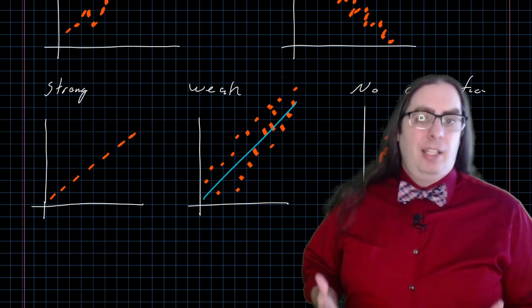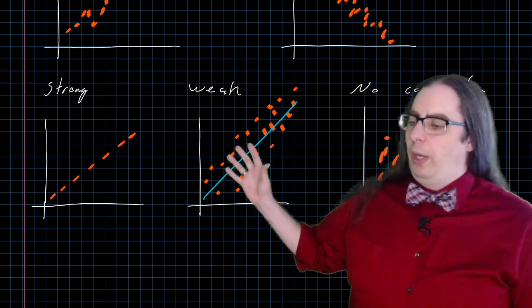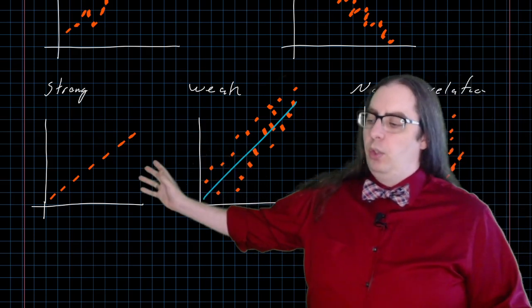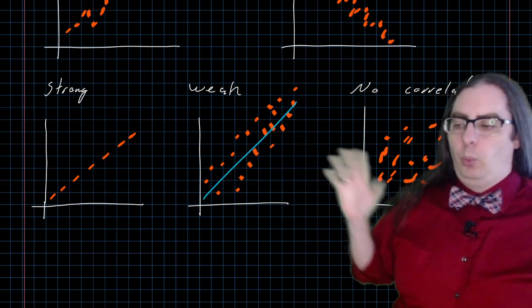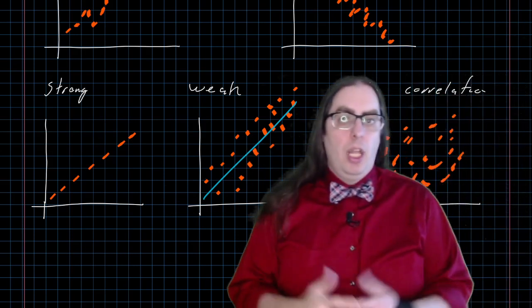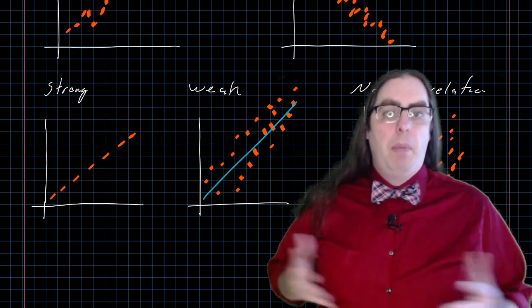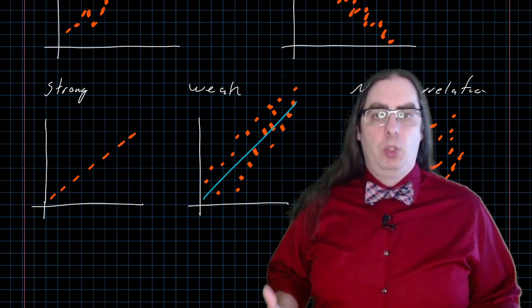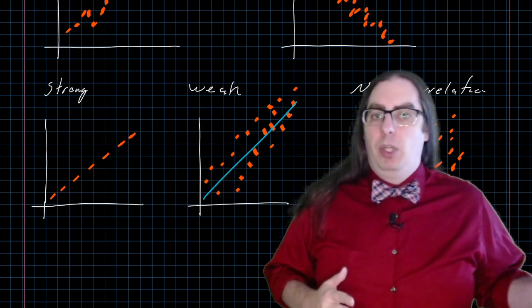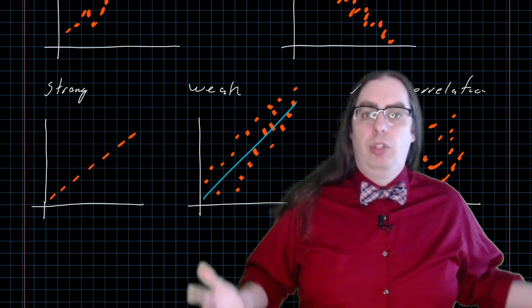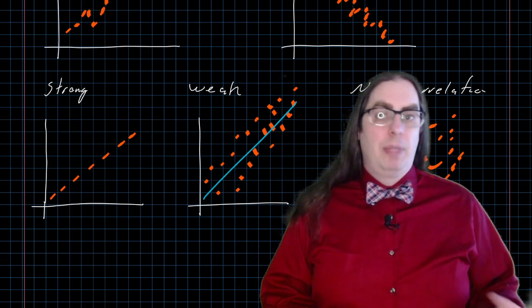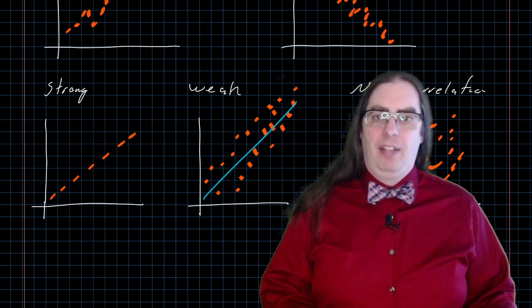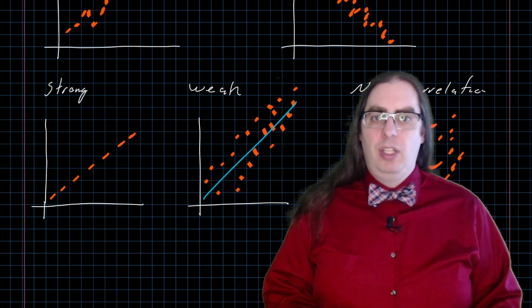For right now, just looking at the pictures and being able to classify things generally based on the picture is good enough. It can get a little bit fuzzy, right? Where do you draw the line between a weak positive linear correlation and a strong positive linear correlation? Where do you draw the line between a weak correlation and no correlation? There is very much a spectrum between those. And if you go beyond having no correlation at all, you can start to trend towards having a negative linear correlation. Sometimes you'll see positive and negative as a single spectrum.